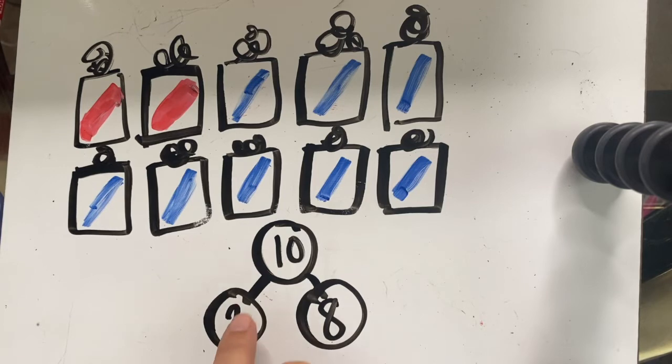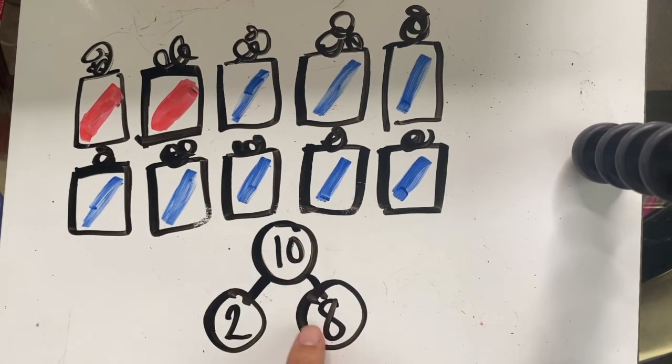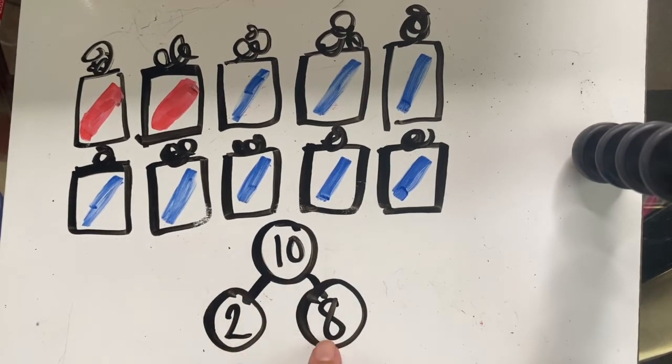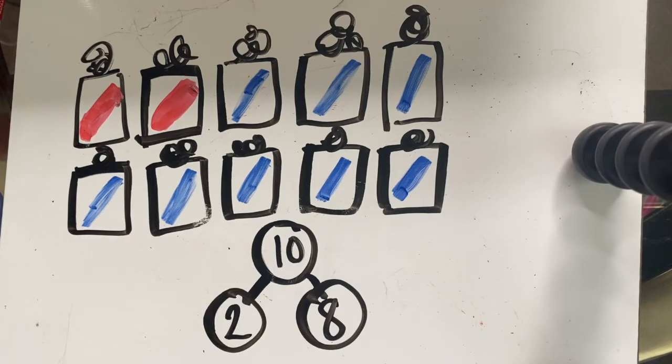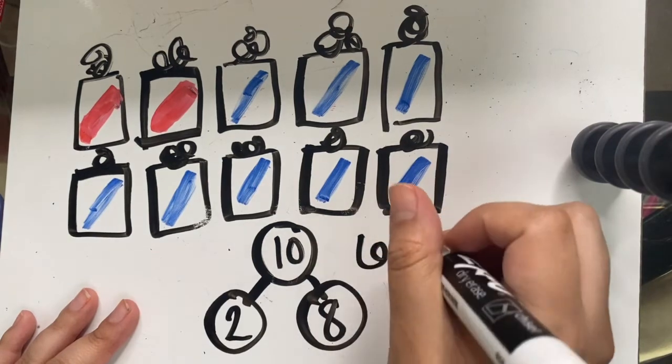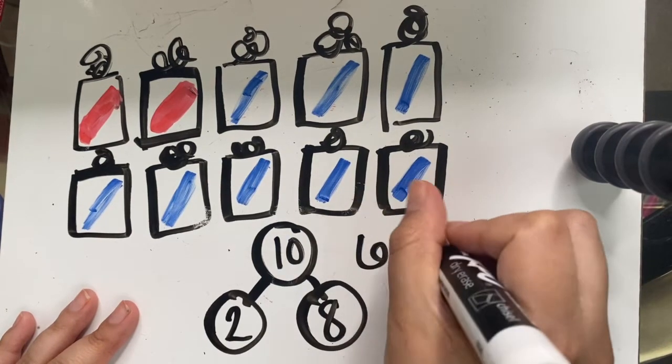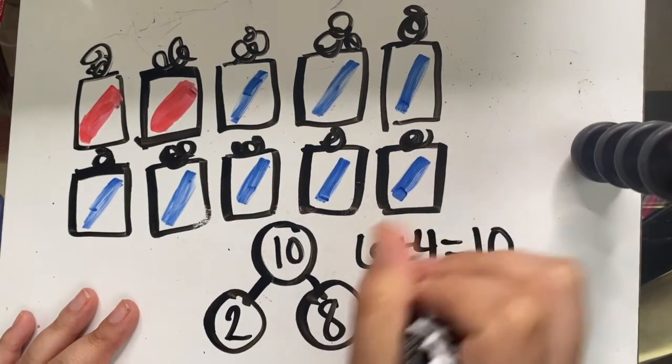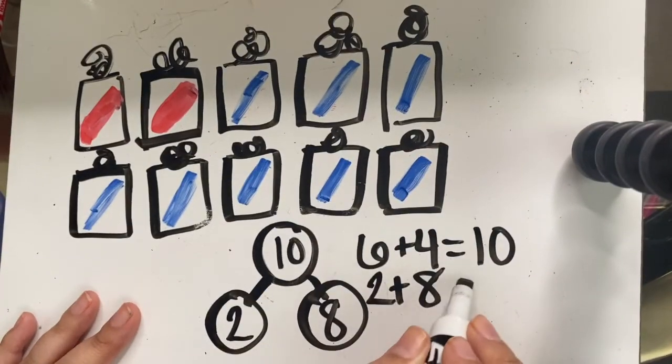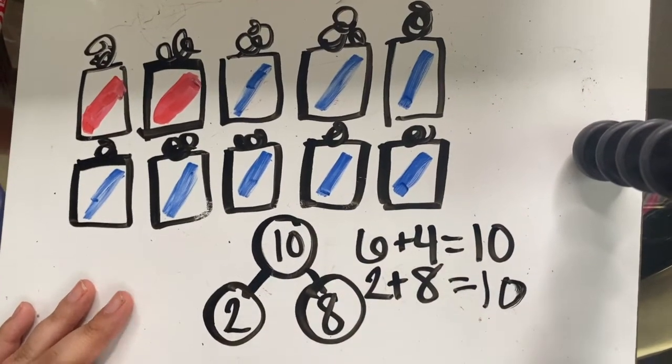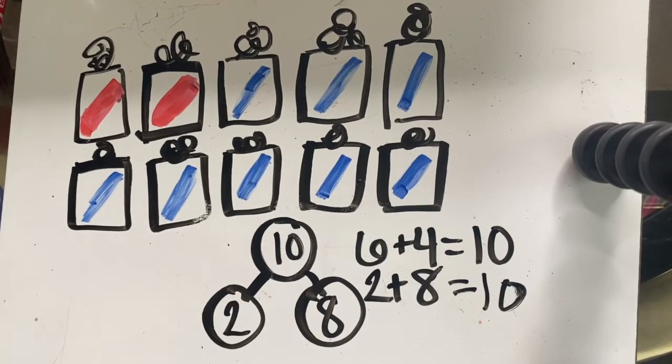Say it. Eight and two make 10. Two and eight make 10. Awesome. So, I showed you two different number partners. I showed you six and four. And I showed you two plus eight. So, your job is to find some other number partners, just like I said before when we were doing the party hats. And that's it for today's concept development.